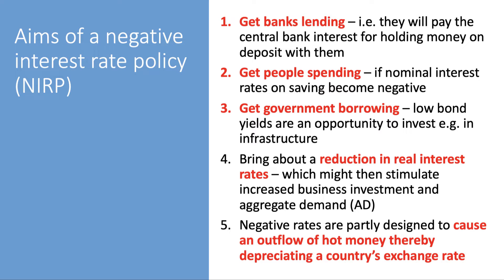The second aim is to get households and consumers to spend, particularly if the nominal interest rate on savings balances becomes negative. The idea is to give consumers an incentive to spend money rather than leave it in bank accounts where its value would be eroded. A third reason is to encourage governments to borrow. With very low bond yields, as seen in Germany, this could be the moment for governments to use fiscal policy to invest — for example in transport infrastructure and environmental projects.